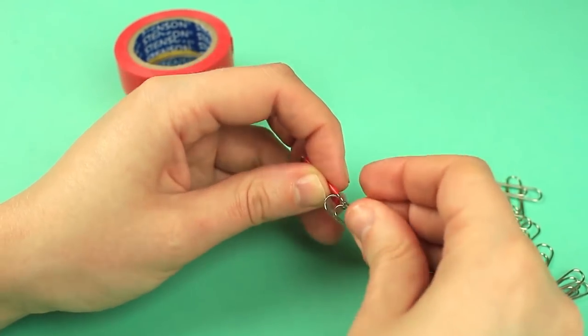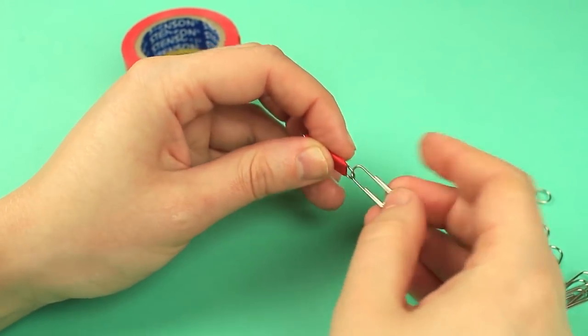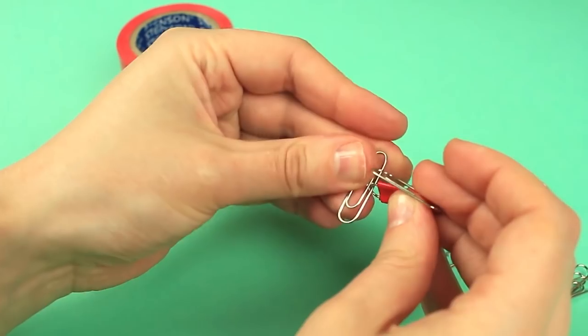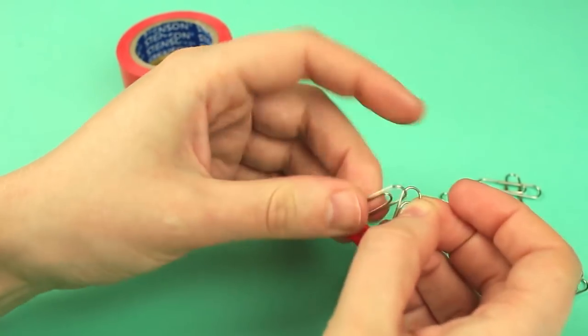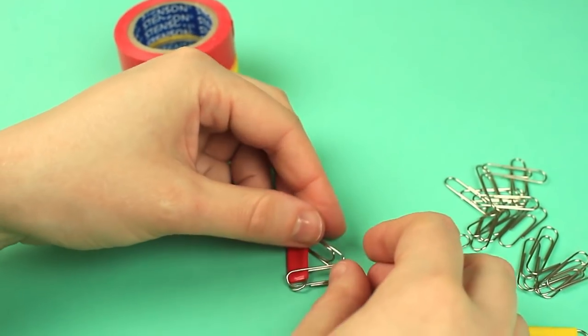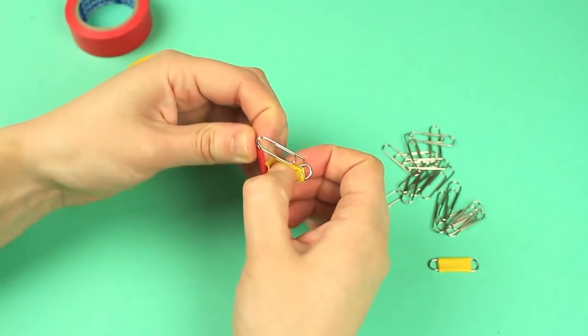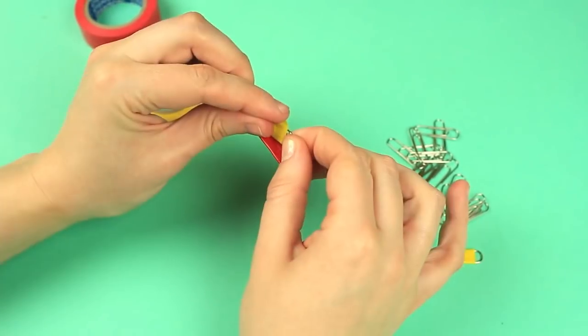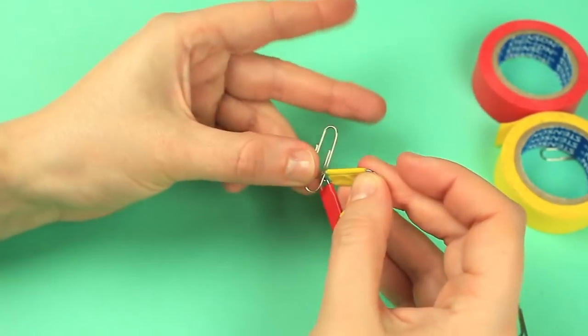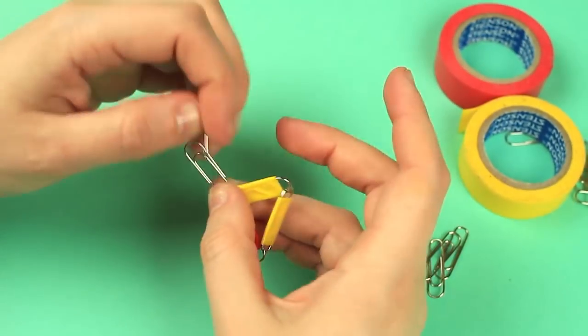Fasten an uncovered clip to the red one. Join these two with another clip to form a triangle. Wind yellow tape around the uncovered edges. Add more clips to make new triangles.